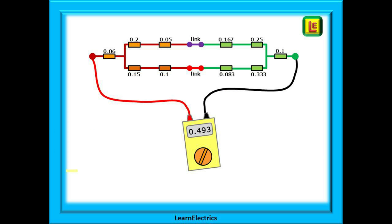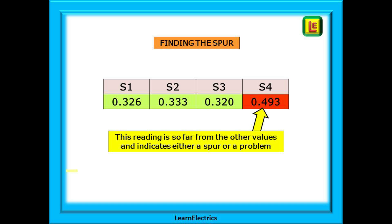And measuring at S4, we're taking all of the series and parallel path into account. When measured, or by calculation, our R1 plus R2 is now 0.493 ohms. We've found the spur.